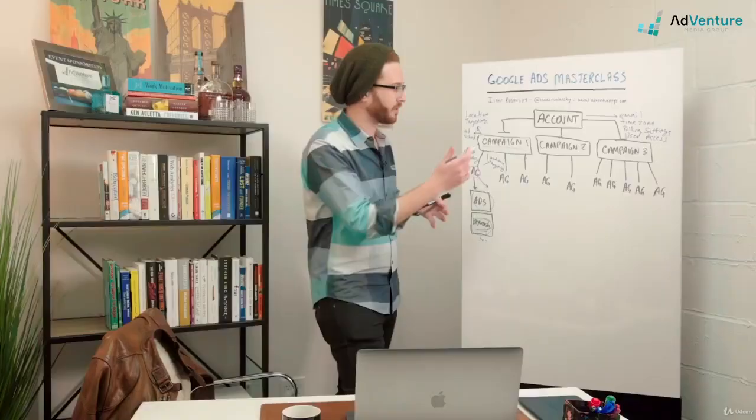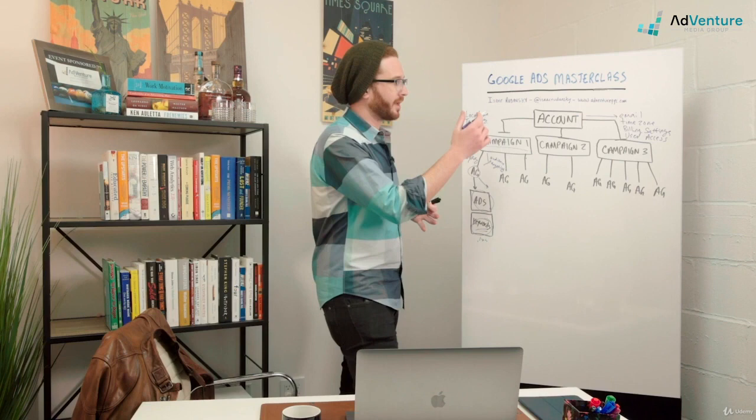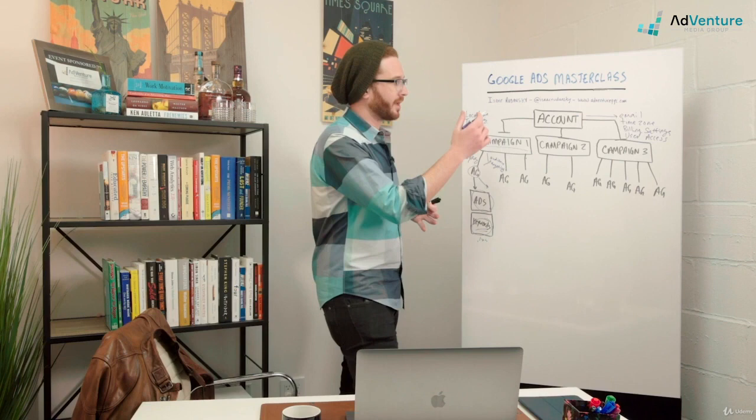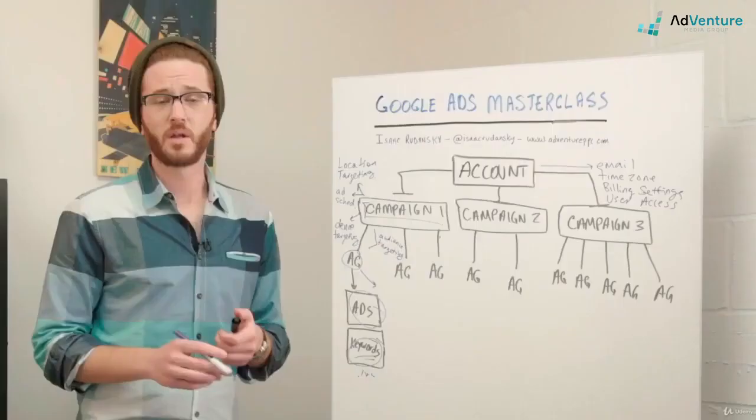Account, campaigns are inside account, ad groups go inside campaigns, ads and keywords go inside ad groups. You could have multiple ads and multiple keywords inside every single ad group. There are a couple of settings that are set up at the campaign level, some settings at the ad group level, some settings at the account level.